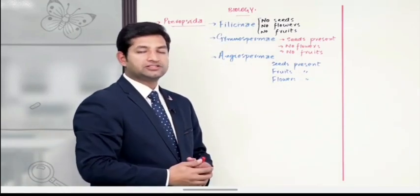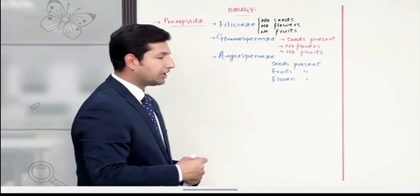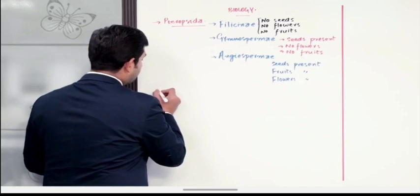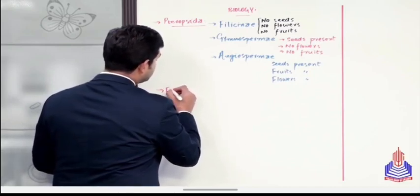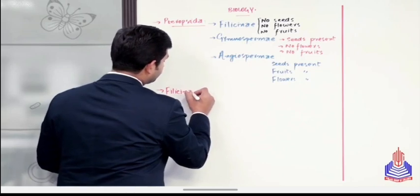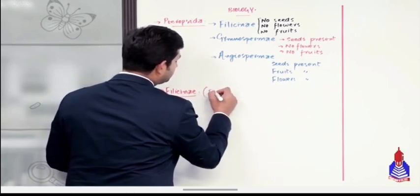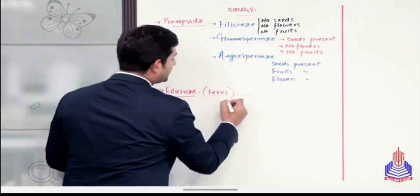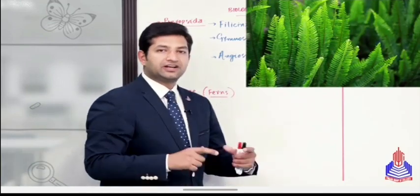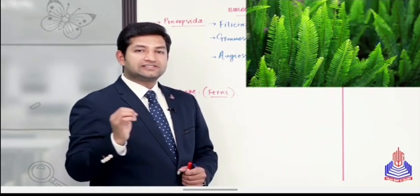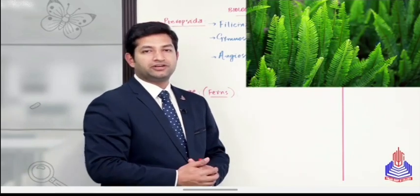सबसे पहले number पर जो अभी हम आगाज़ करने जा रहे हैं, that is Filicinae. So Filicinae is the first group of Pteropsida, and they are known as ferns - that is their common name. And remember students, just like the bryophytes, ferns are moisture and shade loving plants. ये ऐसे पौदे हैं जो ज्यादातर छायादार जगहों पे रहना पसंद करते हैं, और साथ ही साथ इनको moisture का level ज्यादा चाहिए।